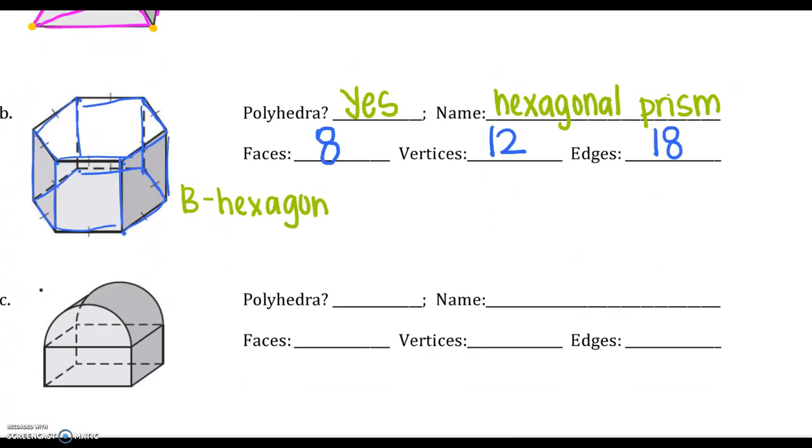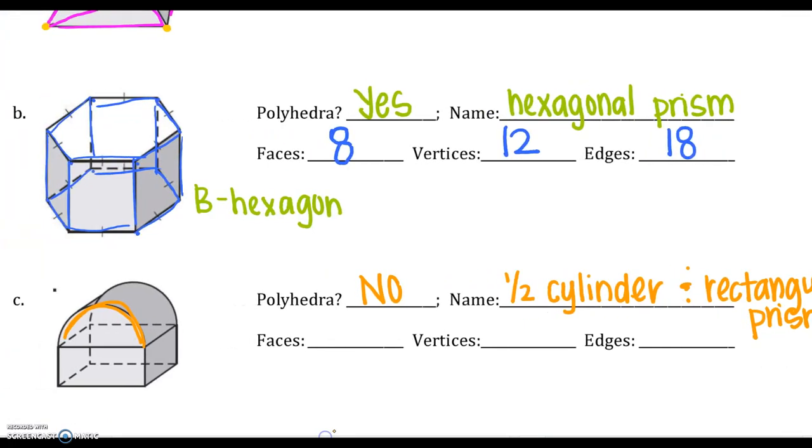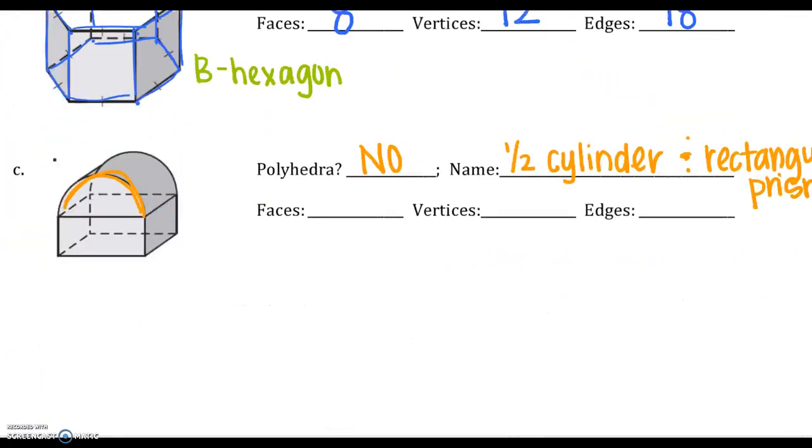On the next one, I see this rounded edge. So is it a polyhedron? No. On your daily, you will possibly have to name it. So I see a half, a cylinder, and a rectangular prism. Stop this video and do your checkpoints real quick.